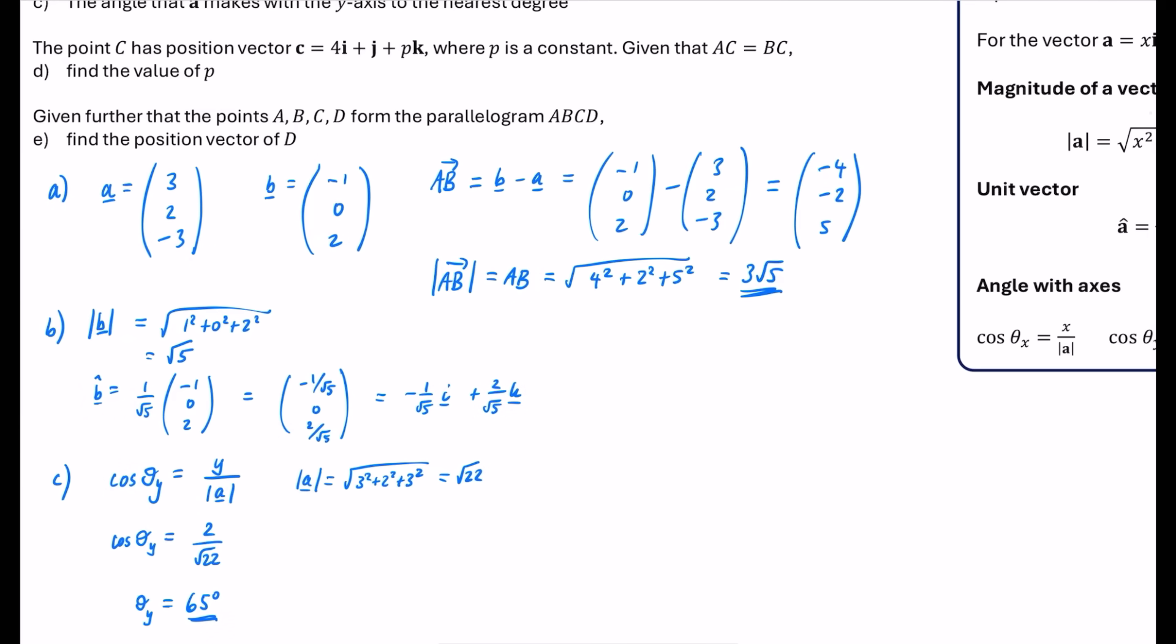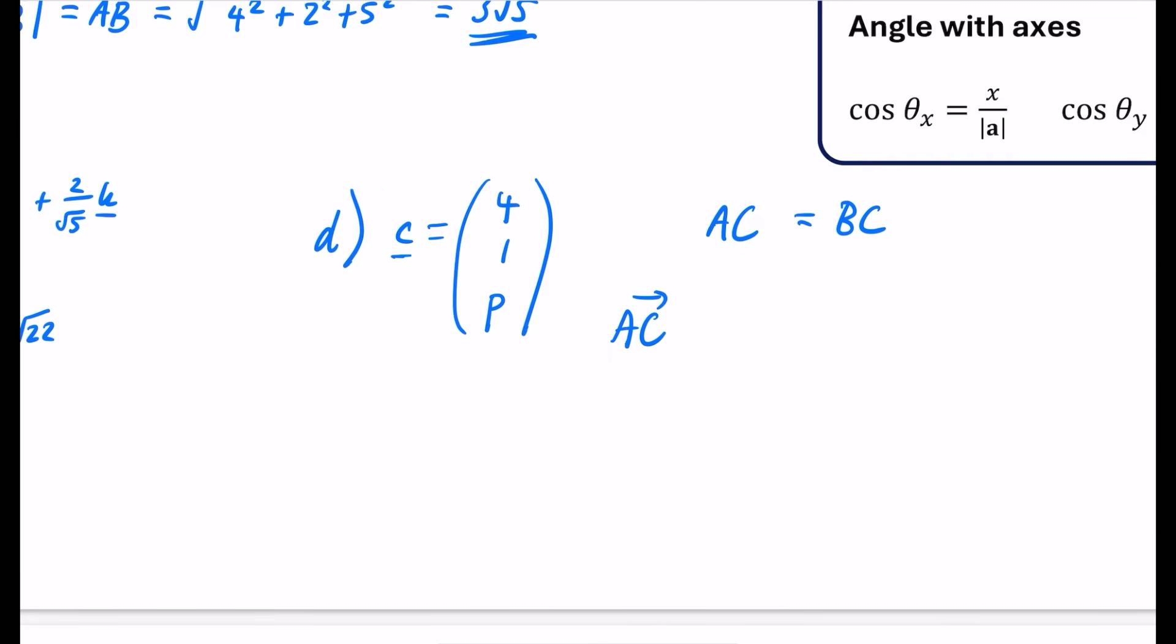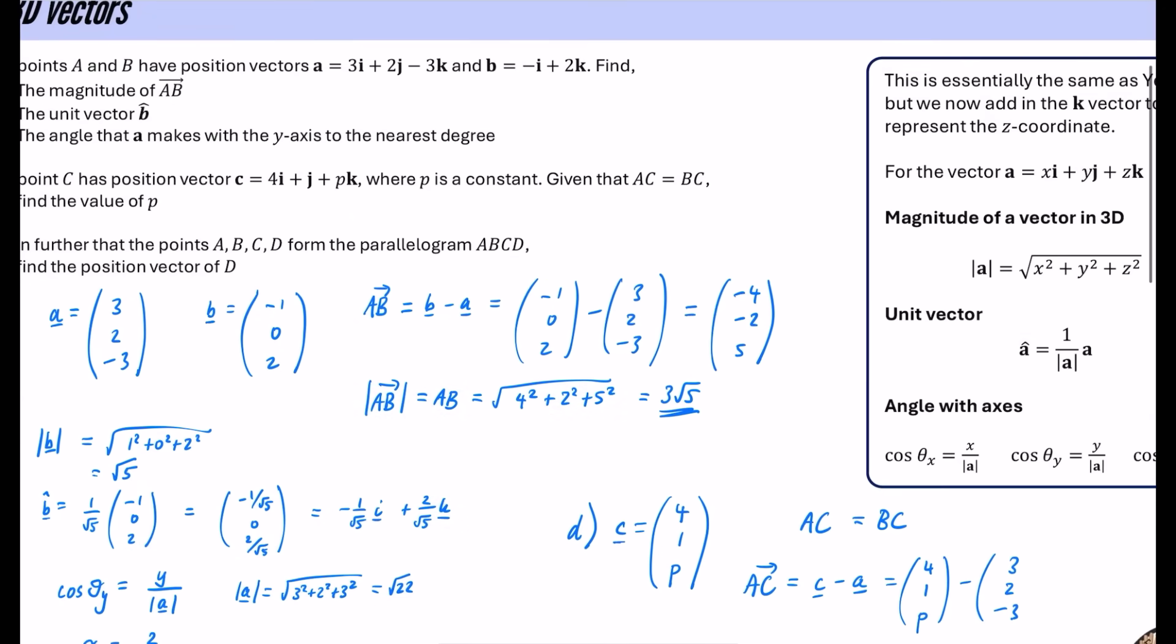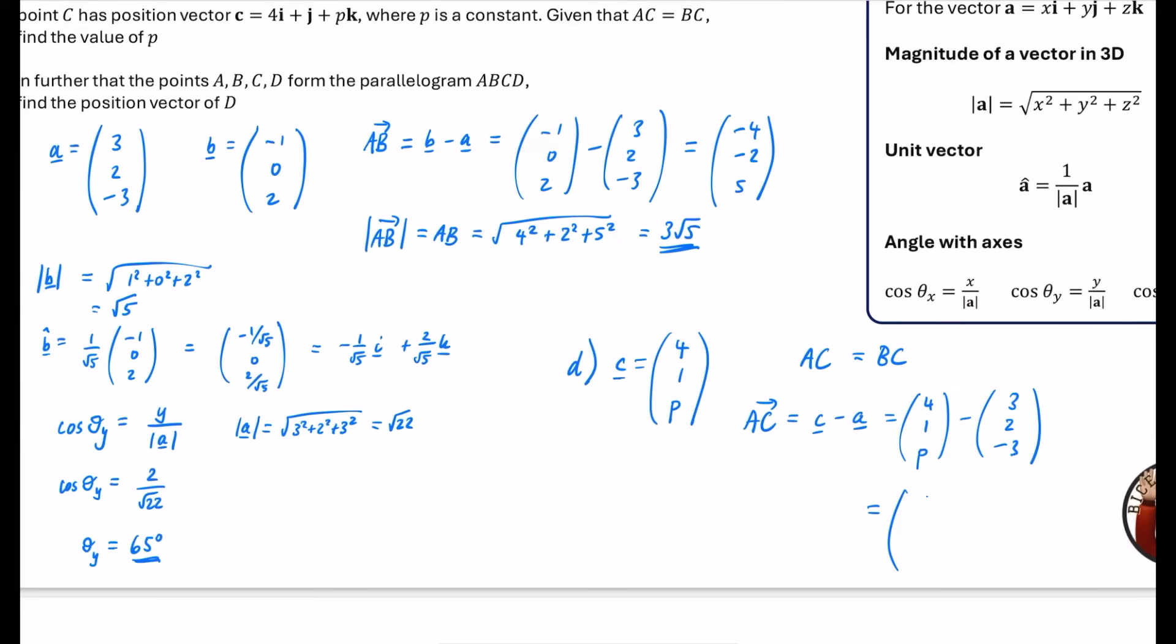Okay, now we're going to have a slightly trickier part for part D and part E. You would never have this many kinds of things in one question, but I decided it would be good to try and squeeze as much as I could in one style of question. So for part D of this question, it says the point C has position vector, and I'm going to immediately write it in this column form, 4i plus j plus pk. So we've got 4, 1, p. And it says, given that AC equals BC, find the value of p. So I know that AC is equal to BC. So I think what I'm going to do, I'm going to actually have to figure out what the vector AC is, which is going to be C minus A. So that's our 4, 1, p. And our A vector, so much having to look around for this, it's a 3, 2, and a minus 3.